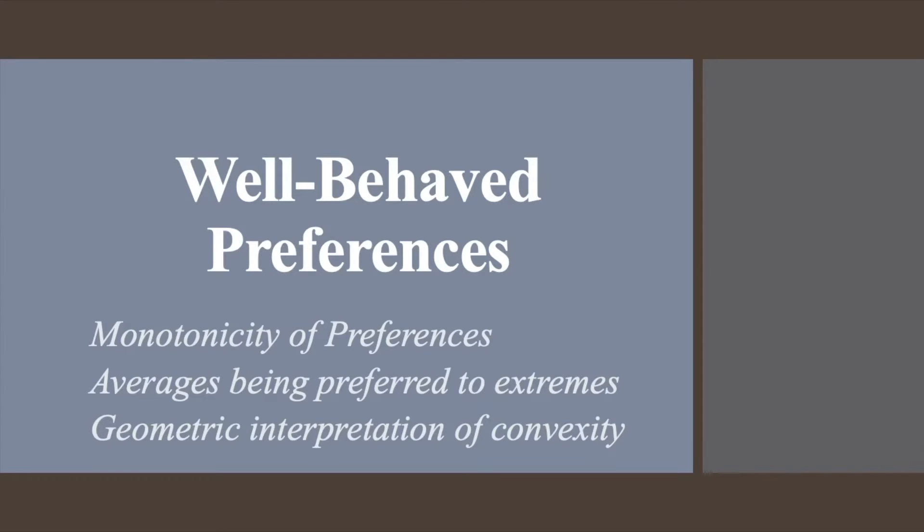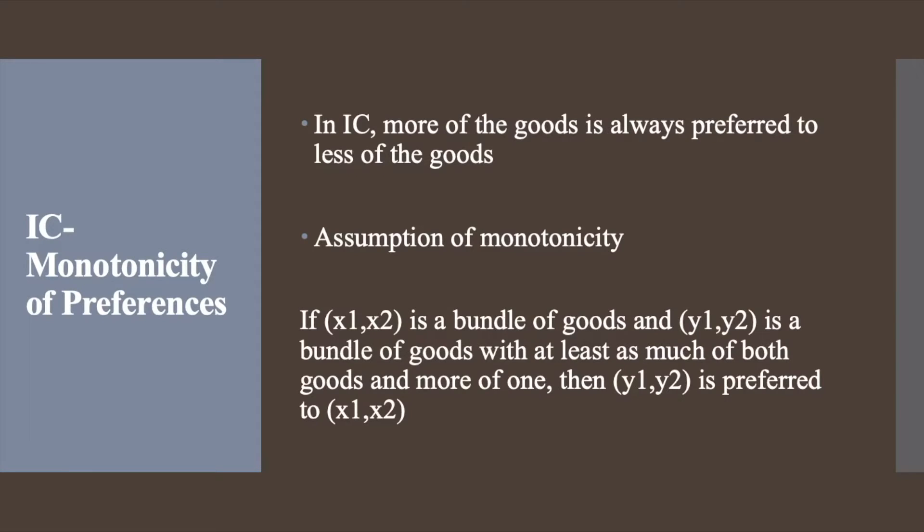With this in mind, let's have a look at the monotonicity of preferences. If (x1, x2) is a bundle of goods and (y1, y2) is another bundle of goods with at least as much of both the goods and more of one, then (y1, y2) is preferred to (x1, x2).